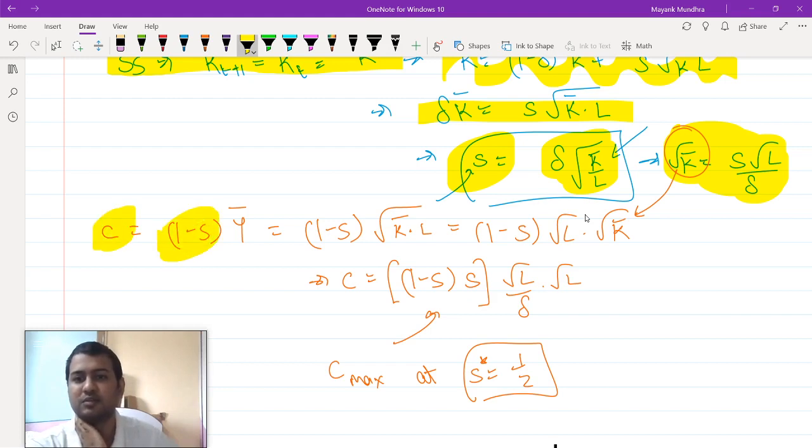Now, consumption, this is equals to 1 minus delta times of y bar. So it is 1 minus delta times of under root K bar into L which is 1 minus s times root L into root K bar. I will just take this root K bar from here and substitute it here. So I will get consumption equals to 1 minus delta s into root L by delta into root L.